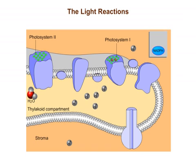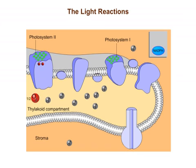Electrons leaving this electron transport chain enter photosystem I, replenishing its lost electrons. Photosystem II replenishes its electrons by splitting water. Hydrogen ions and oxygen are released into the thylakoid compartment — this is where the oxygen gas generated by photosynthesis comes from.